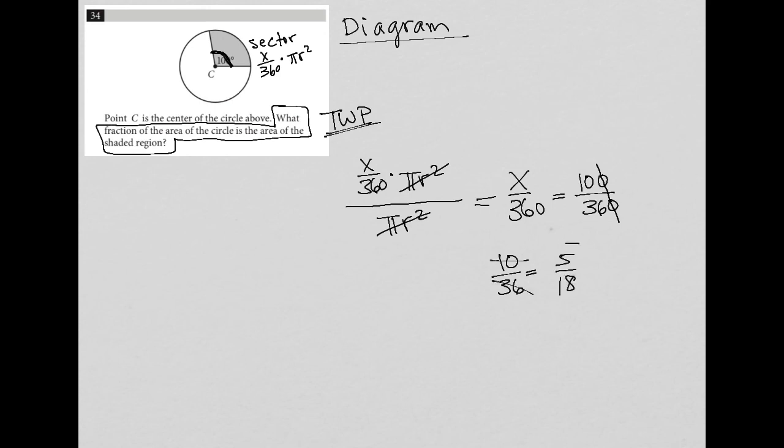And therefore, here is our answer. This 5/18 is the fraction of the area of the circle that is the area of the shaded region. The shaded region is 5/18 the area of the whole circle. So here we go.